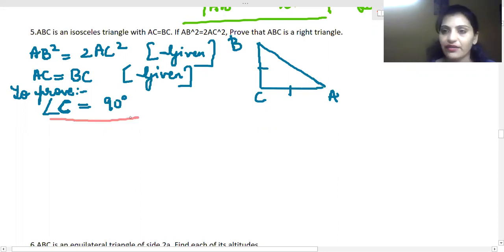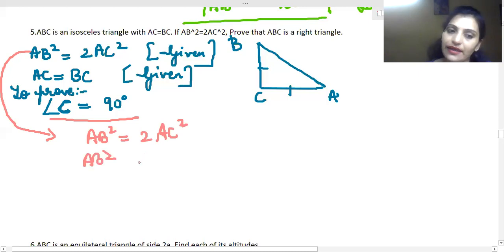Now, we will focus on the right triangle and we will conclude to the given thing, right? So, AB square is equal to twice of AC square. If I want to write this, I can write it down as AB square is equal to AC square plus AC square.